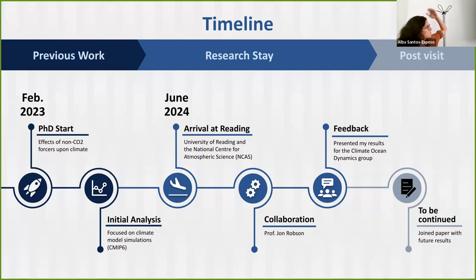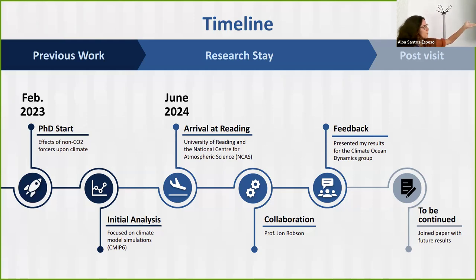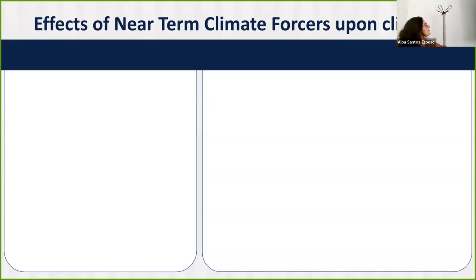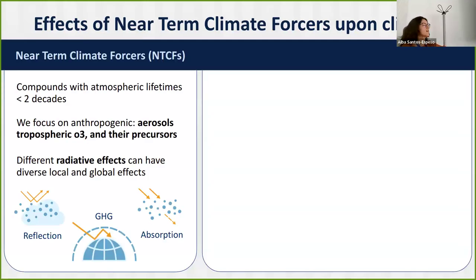This slide sums up what today's presentation will cover. I'll start with a brief summary of the initial analysis that led me to the research stay, then delve further into what I did at Reading, and sum up a slide on future work we are planning. So let's start with the beginning: what are near-time climate forces? Near-time climate forces are atmospheric species that have short atmospheric lifetimes — we are talking about less than two decades — and we are going to focus here on anthropogenic aerosols, tropospheric ozone, and their precursors.